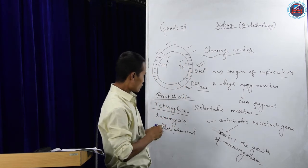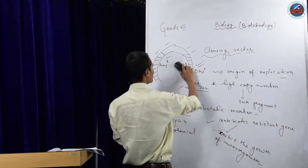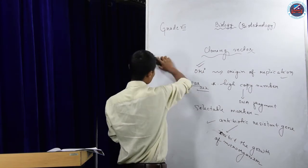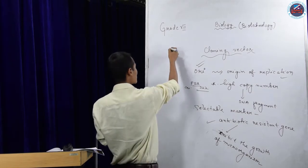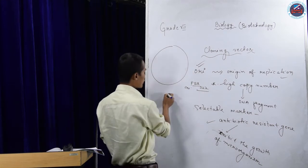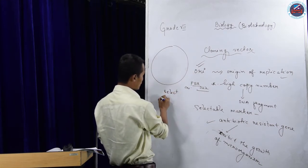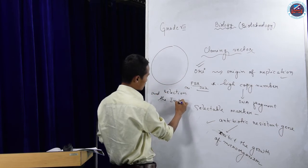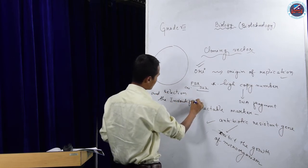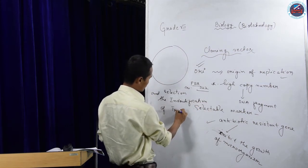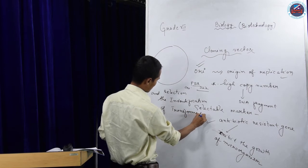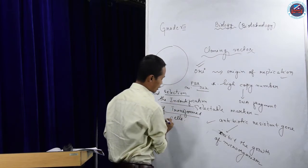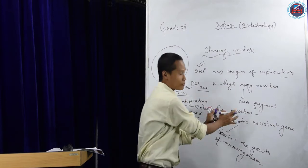This selectable marker point is very important. There is a second condition: the selectable marker is going to help in the selection and identification of transformed cells. I will discuss what transformed cells are in the next class.